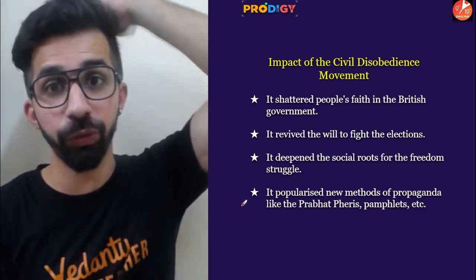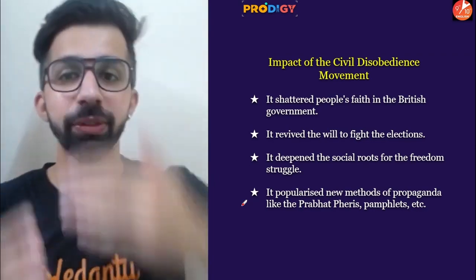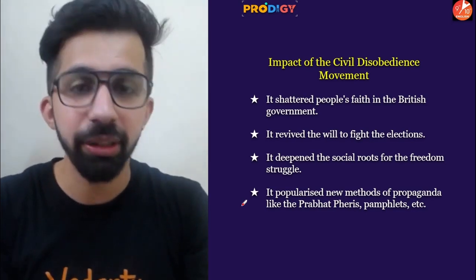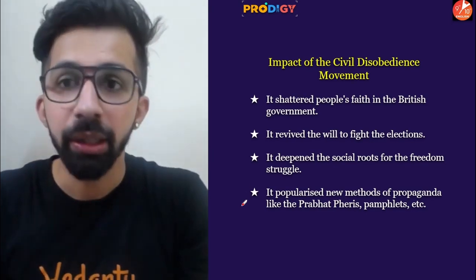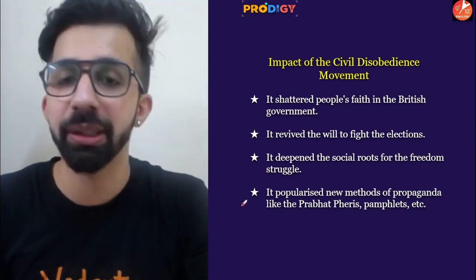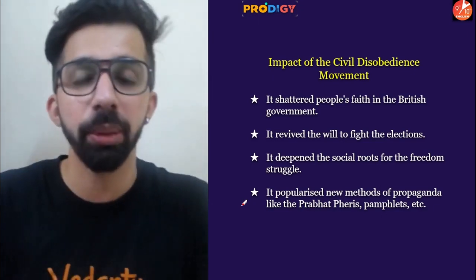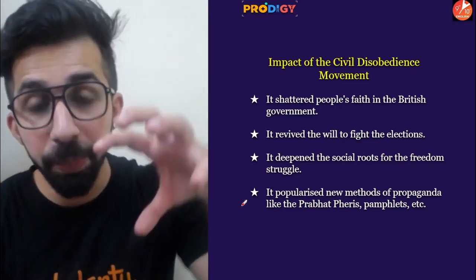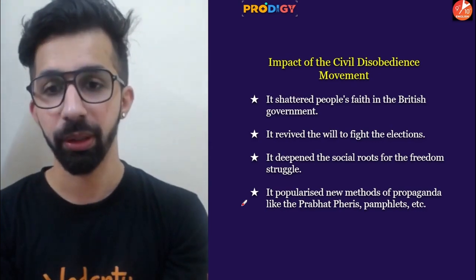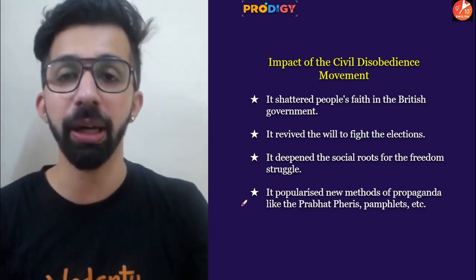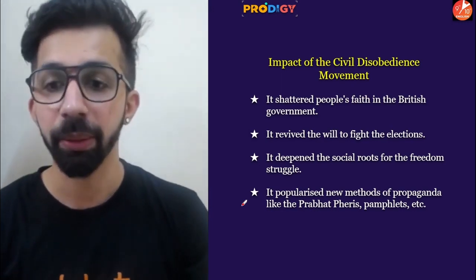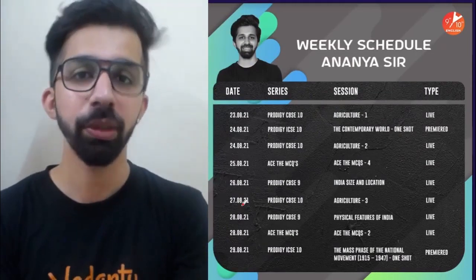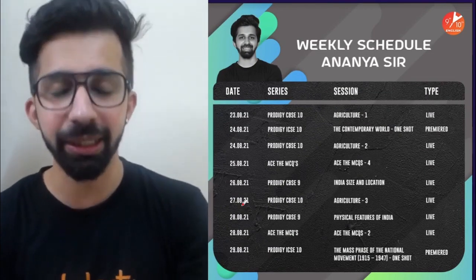The impact of the Civil Disobedience Movement: it shattered people's faith in the British government. We realized Britishers were not going to fulfill our demands and we lost our trust in the British government. It revived the will to fight, deepened the social roots of the freedom struggle, and popularized new methods of propaganda like Prabhat Pheris — morning walks together, pamphlets — through which we started spreading our ideas. We will discuss what happened next in the following video.